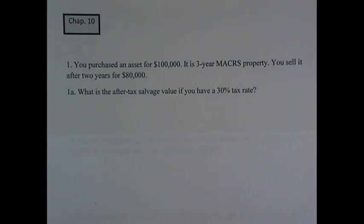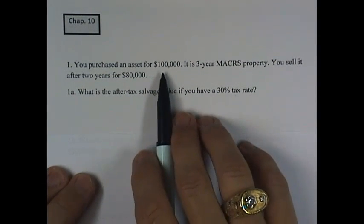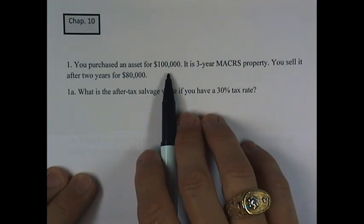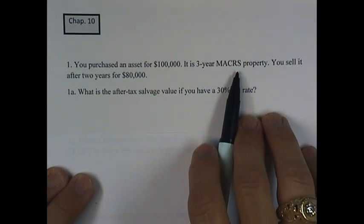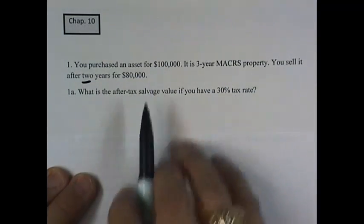For the Chapter 10 Supplemental Homework Problems, we start with an after-tax salvage value problem for an asset that we purchased for $100,000. It's depreciated three years under MACRS, and you sell it after two years for $80,000.